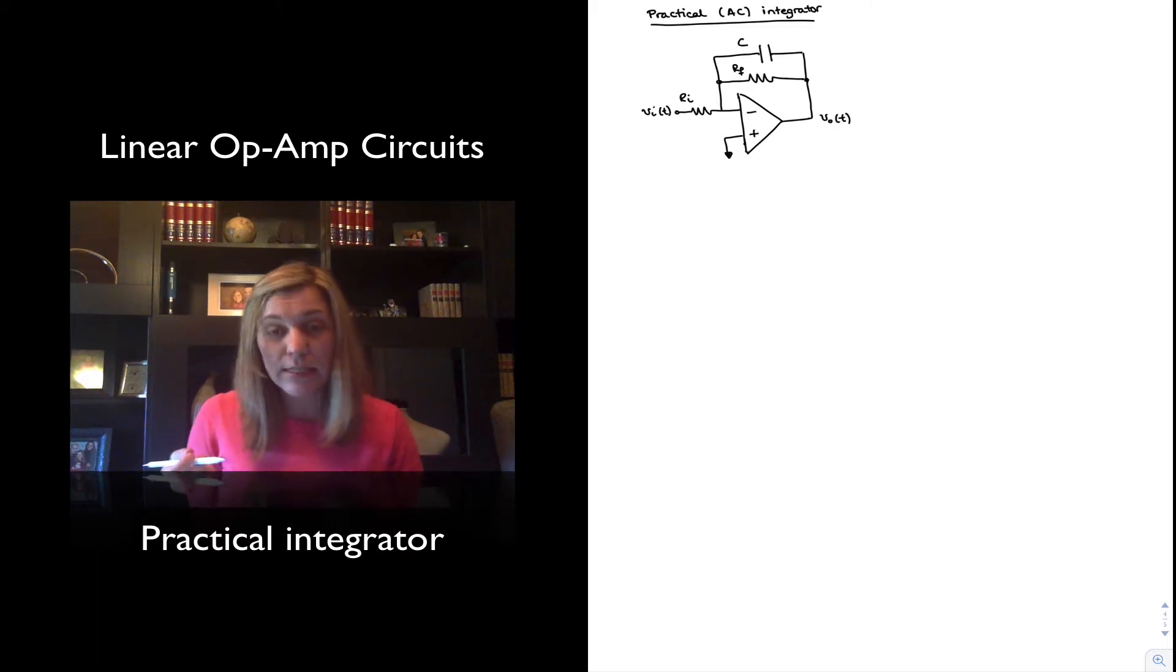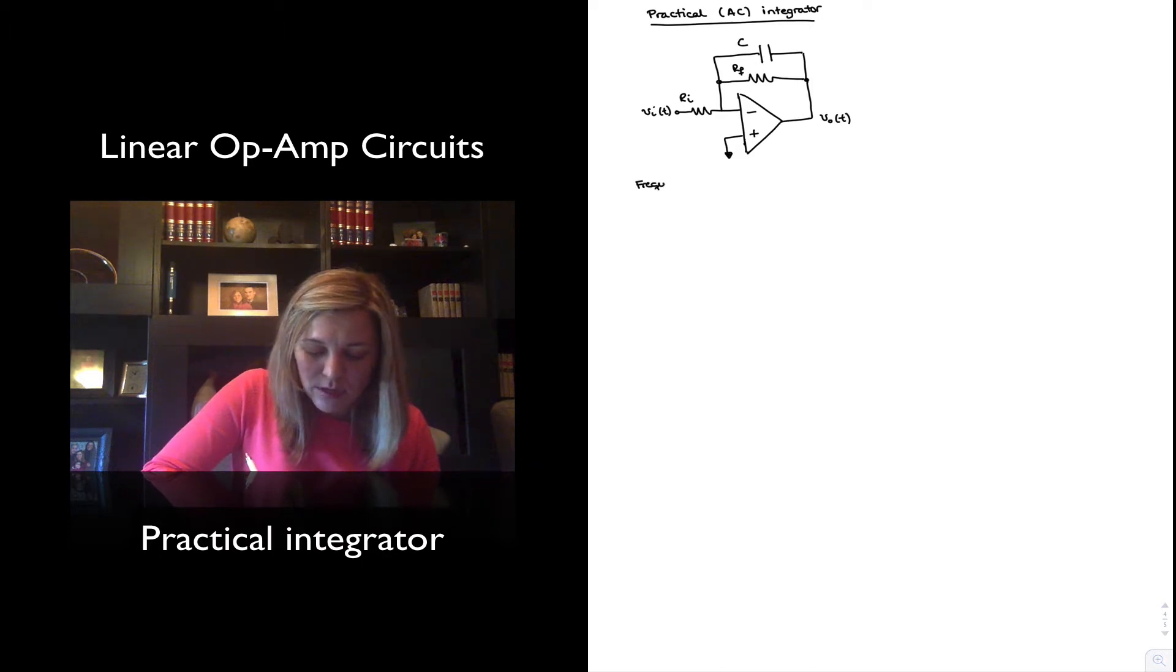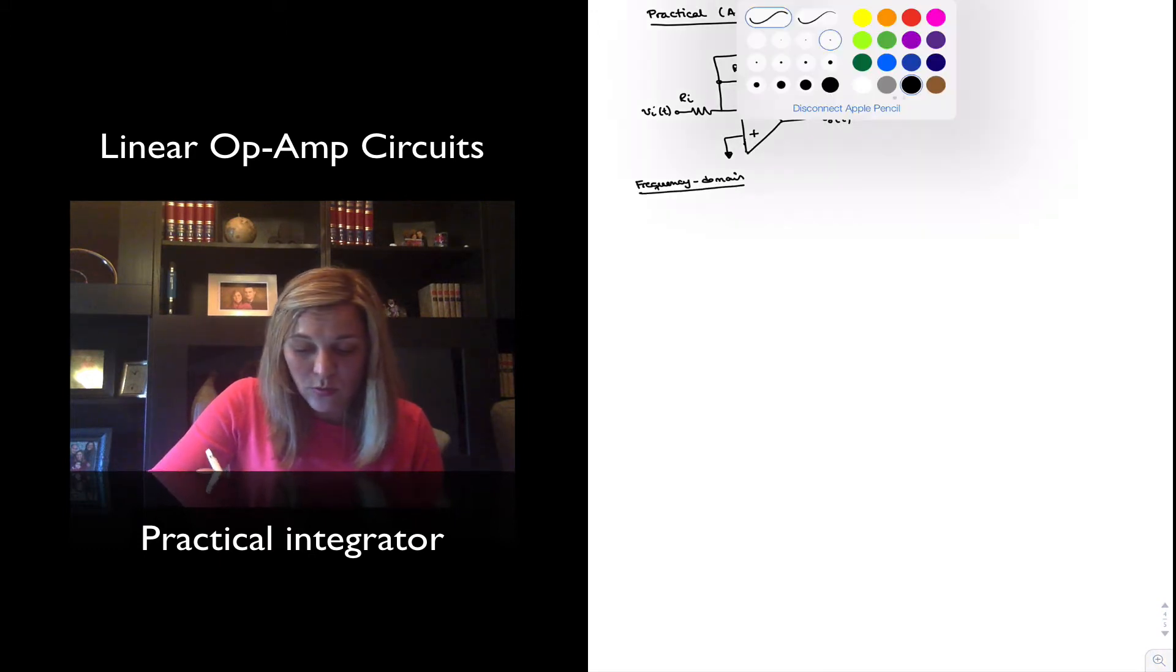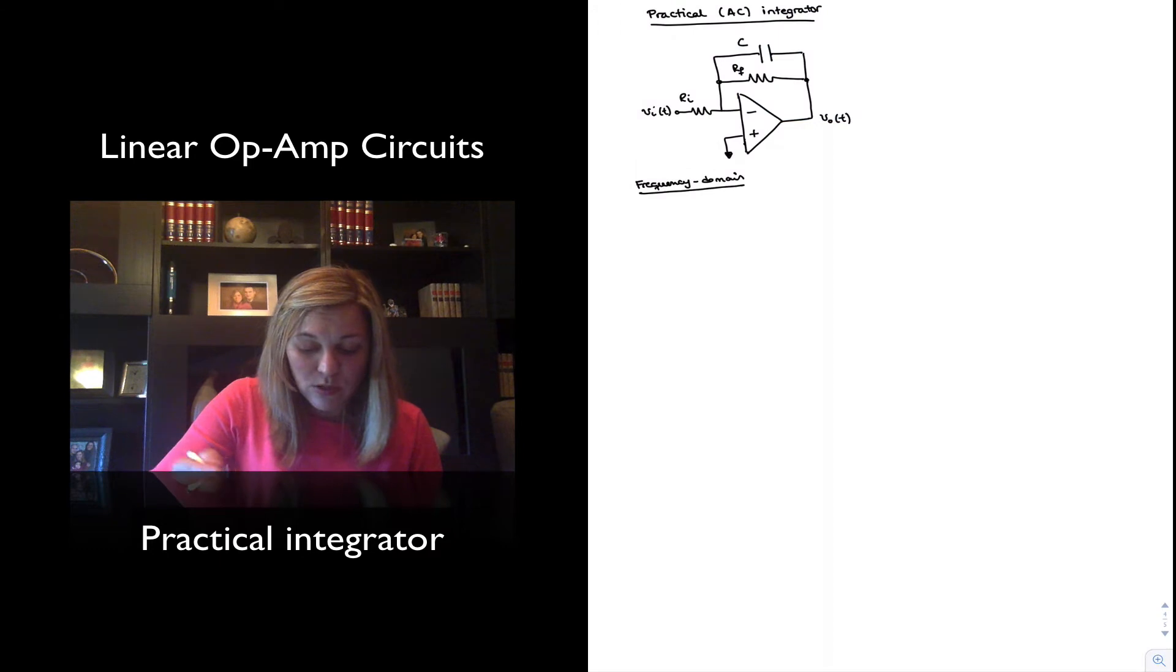Let's go ahead and analyze this circuit in the frequency domain, because that's going to be simpler. In order to do that, I'm going to replace the values of the components with their frequency domain equivalents, so my input voltage and output voltage will become their phasor equivalents. The resistances in the frequency domain, the impedance of a resistor is just the resistance, and the impedance of a capacitor will be 1 over j omega C.